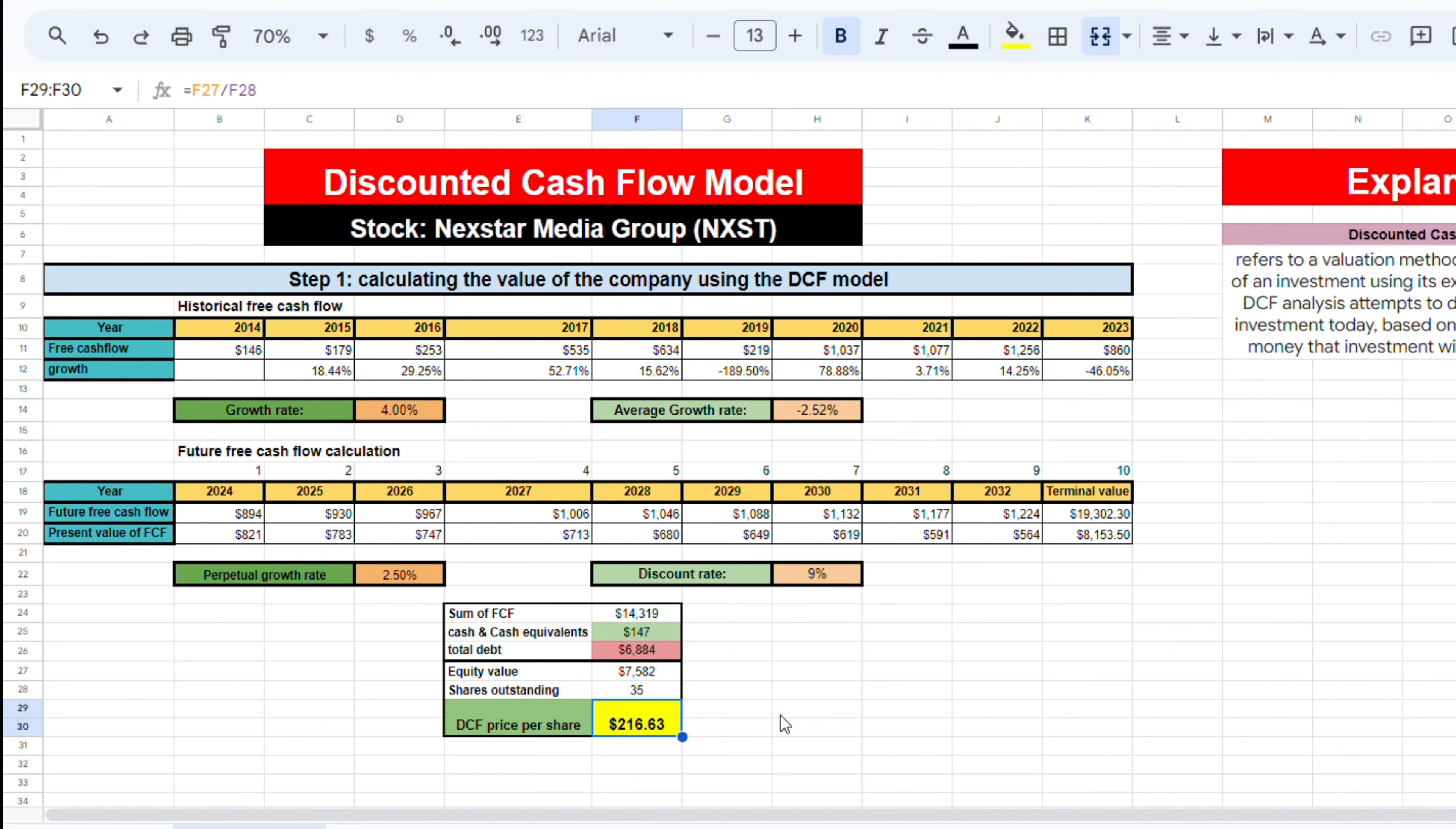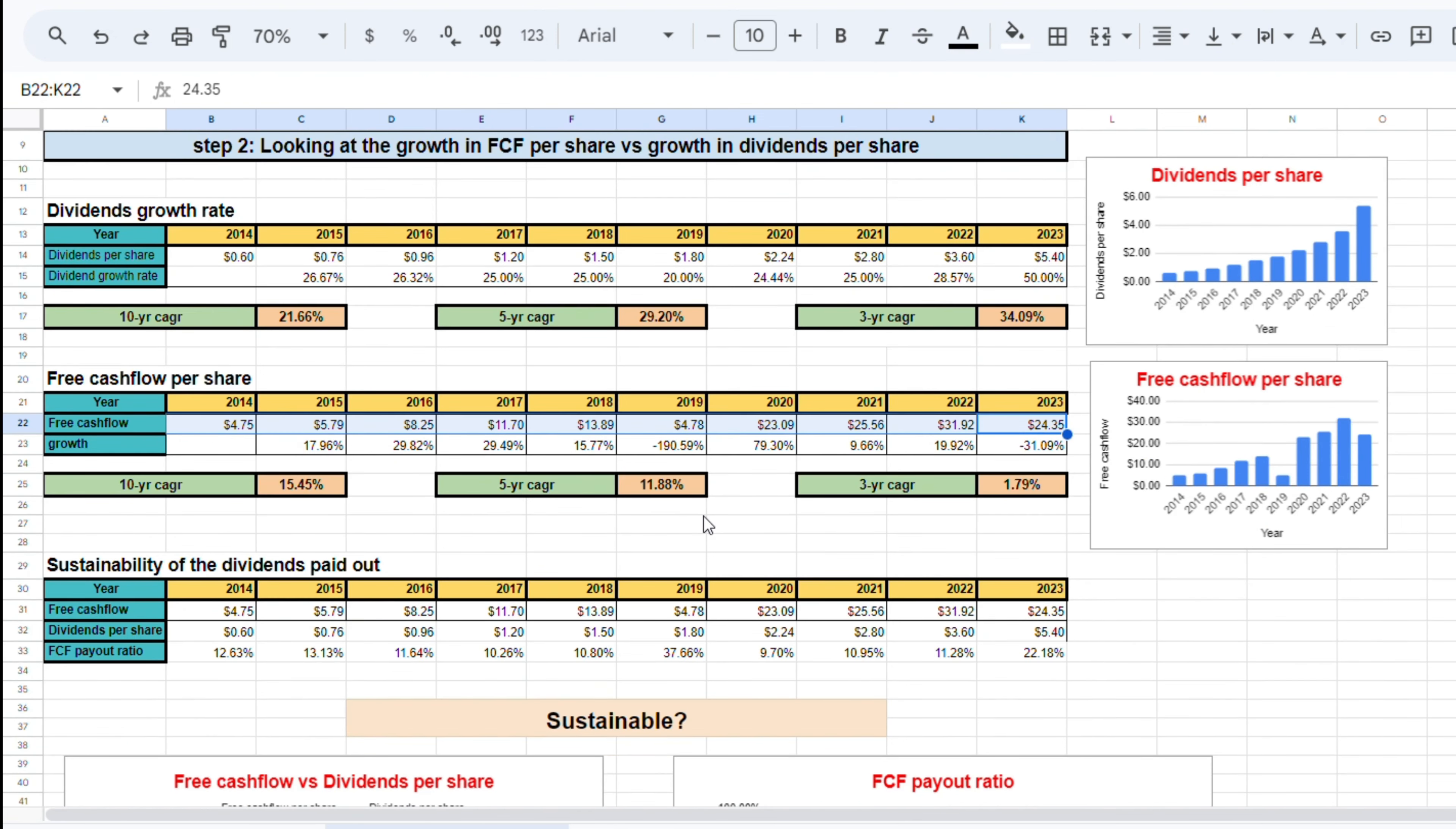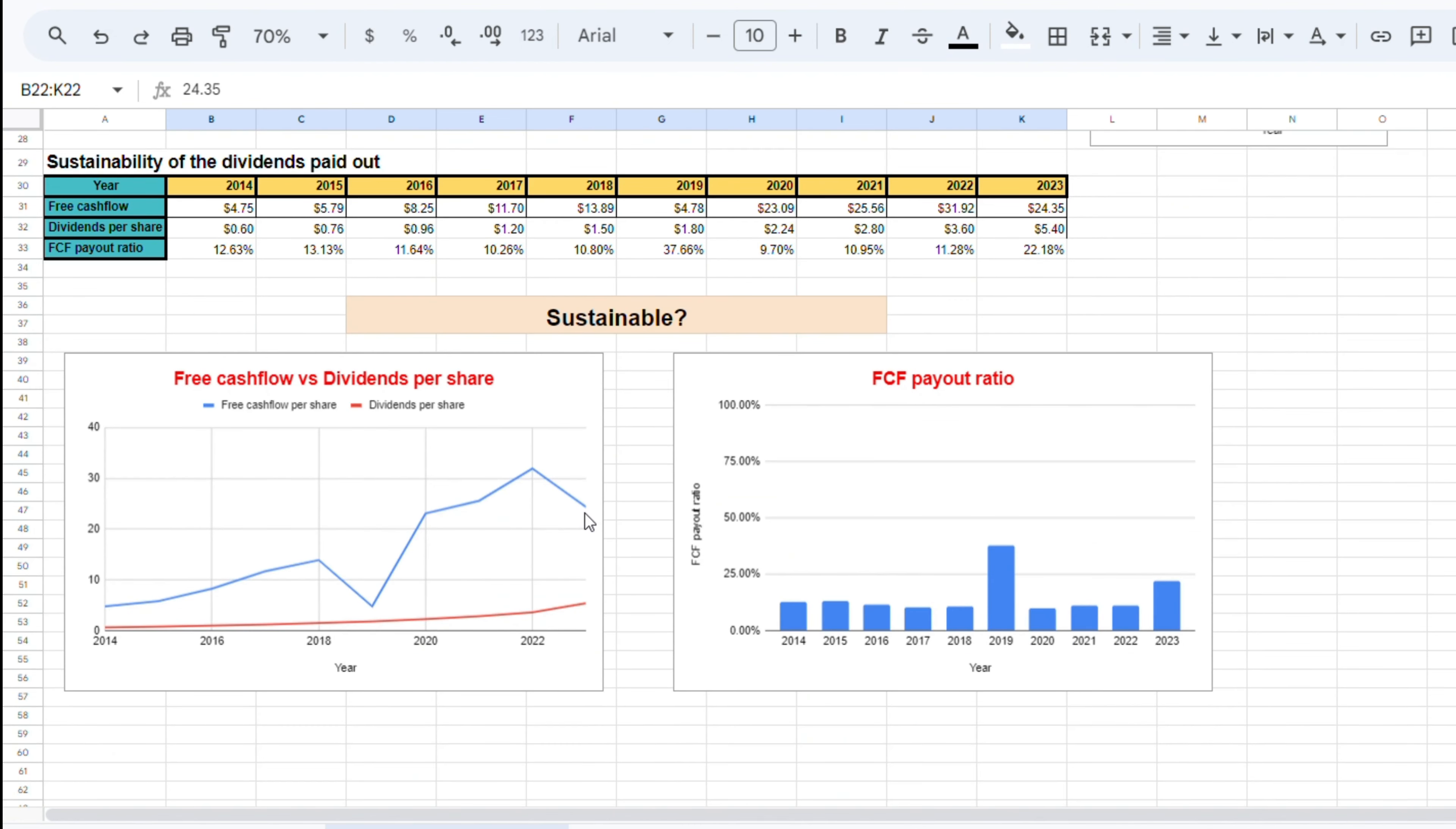Not only do I want to know about the future of the cash flows, I want to know if the dividends paid out are sustainable. We need to put the dividends per share next to the free cash flow per share and see how these two relate. Because remember, dividends are paid out of free cash flow. Combining the two, we can see that the free cash flow is well above the dividends per share.